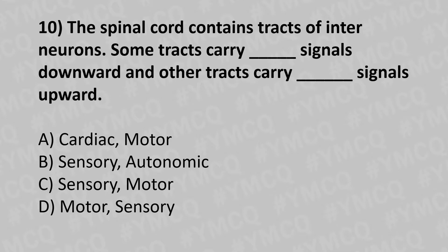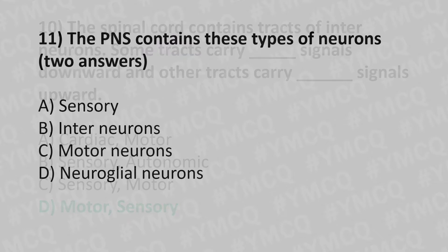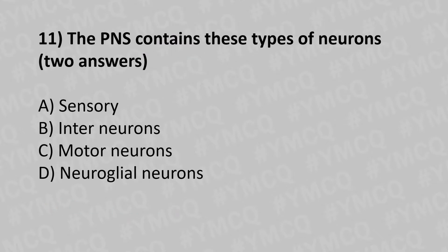Moving to our tenth question. The spinal cord contains a tract of interneurons; some tracts carry dash signals downward and the other track carries dash signals upward. Option A: cardiac and motor. Option B: sensory and autonomic. Option C: sensory and motor. Option D: motor and sensory. And the answer is option D: motor and sensory.